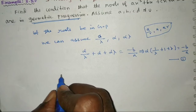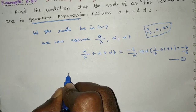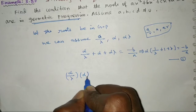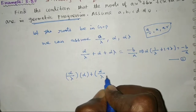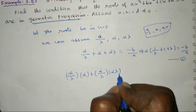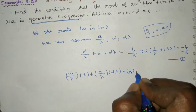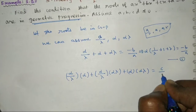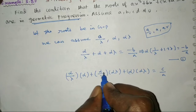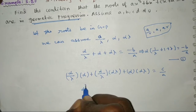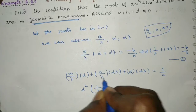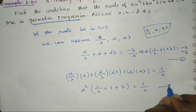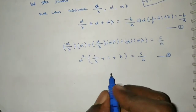The sum of products of pairs of roots: (α/λ)(α) + (α)(αλ) + (α/λ)(αλ) equals c/a. This simplifies to α²(1/λ + λ + 1) = c/a. This gives us equation 2.